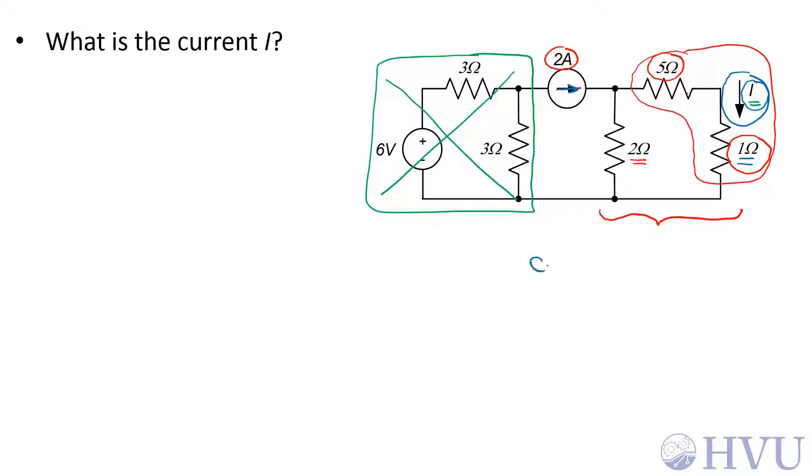That's a perfect case for a current divider. So this side of this circuit becomes a known 2 amp current from this source going into a parallel combination of a 2 ohm resistor and an equivalent resistance.